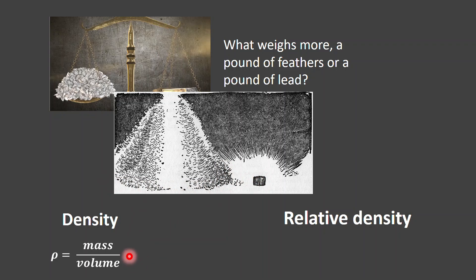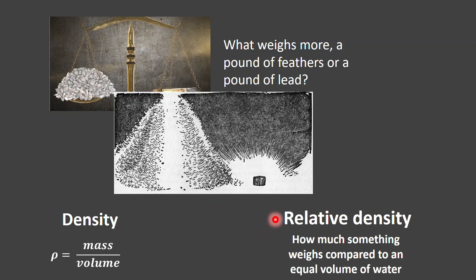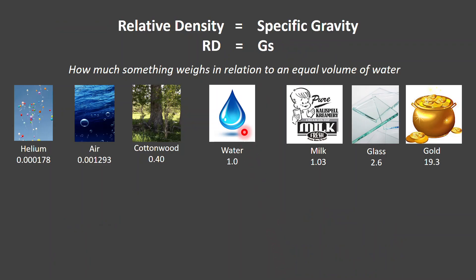We'll use density next week with mass-volume relationships, and it becomes really important for the Proctor compaction test. This week I want us to focus on relative density: how much something weighs compared to an equal volume of water — that word 'equal' is key. You'll see the terms 'relative density' and 'specific gravity' used interchangeably in the book; for our purposes they mean the exact same thing.